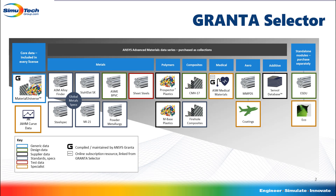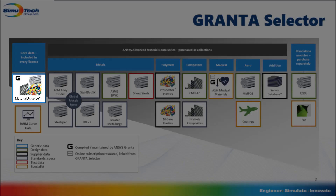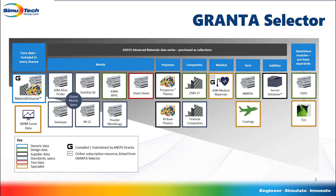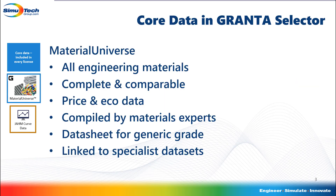In addition to data sheets, the ANSYS Granta Selector also includes standards and specifications for many materials, compiled into its Material Universe. The Material Universe contains complete data sheets for over 4,000 materials, providing complete and comparable data for all of the main classes of commercially available engineering materials. Each data sheet represents the performance of the generic material type, with links to data sheets for individual grades and designations in the specialist data modules.